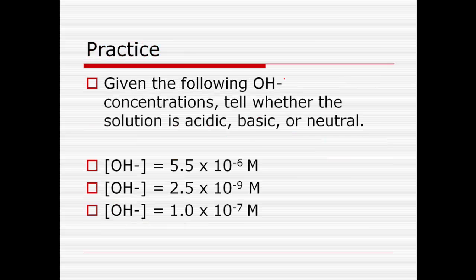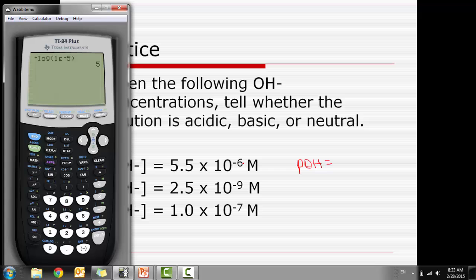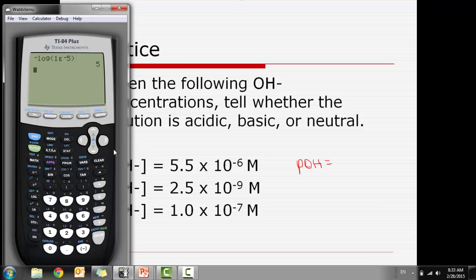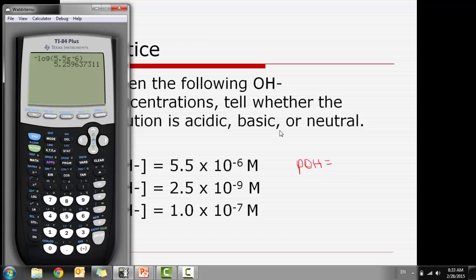Let's do a couple of practice problems with OH concentrations to determine if a solution is acidic, basic, or neutral. We take these values, negative log them to get the pOH, then use the pOH scale. For 5.5 times 10 to the negative 6: negative log of 5.5 times 10 to the negative 6 gives us 5.2596. Rounded to 2 sig figs, the pOH is 5.26. Since the pOH scale is backwards, a pOH less than 7 makes this a basic solution.